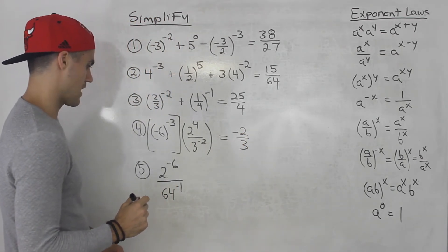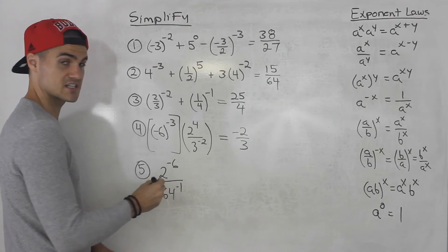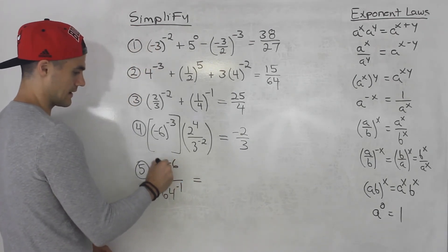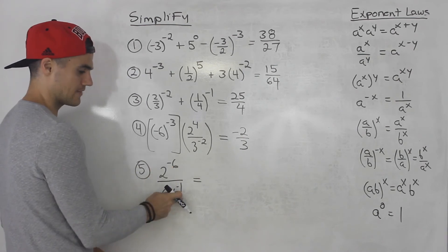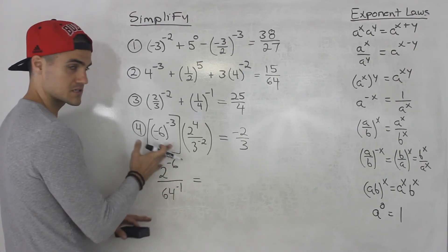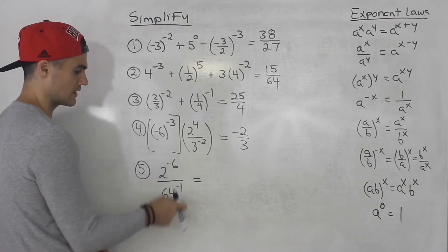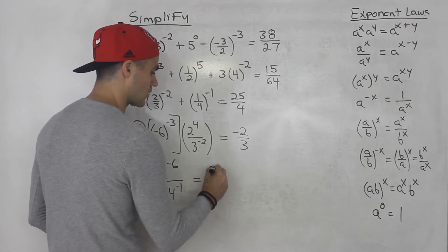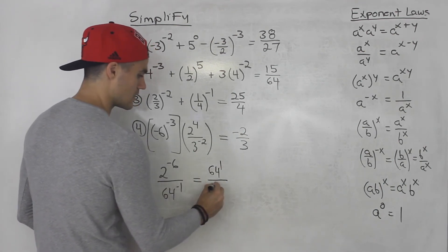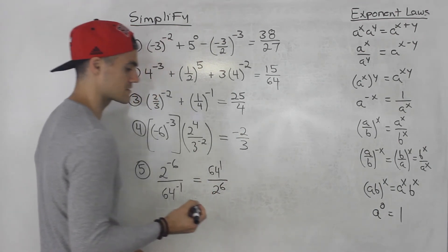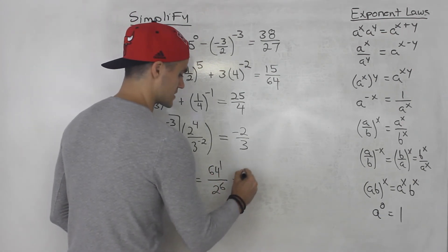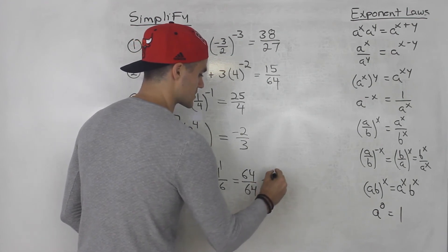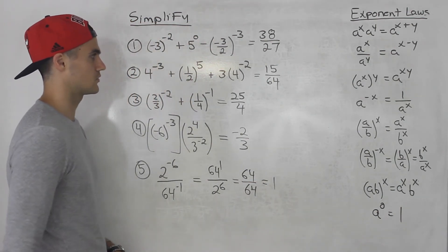Finally, number five: we got two to the negative six over 64 to the negative one. We have negative exponents in the numerator and the denominator. So take all of the exponents and flip them over — two to the negative six brings down, 64 to the negative one brings up. That ends up being 64 to the power of positive one over two to the power of positive six. 64 to the power of one is 64, and two to the power of six is 64. So 64 over 64 is just one.